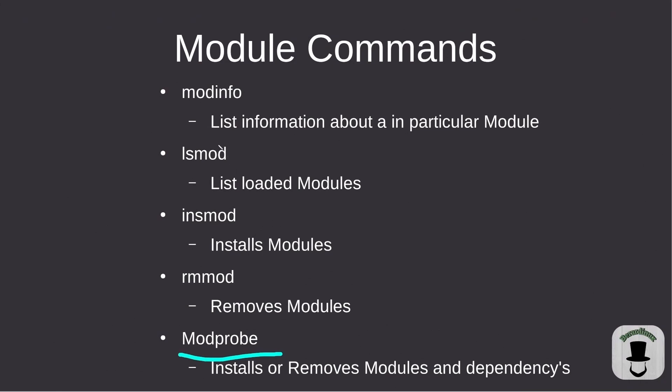The modinfo command lets you find where a module is located on your system and gives you a large list of information about that individual module. lsmod lists the loaded modules inside your kernel. insmod installs a module — you need to provide the full location of the module file. rmmod removes a module. modprobe differs in that it will install or remove modules along with their dependencies.